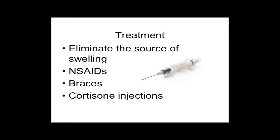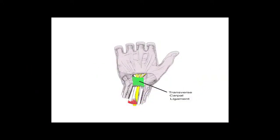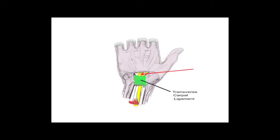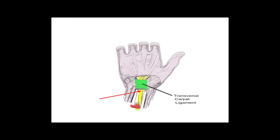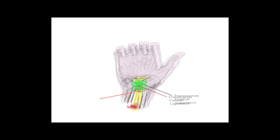Cortisone injections can also work. As a potent anti-inflammatory, cortisone delivered into the carpal tunnel can decrease inflammation around the median nerve. The injection is best delivered right through the transverse carpal ligament into the tunnel underneath — less effective if given more proximally or distally.